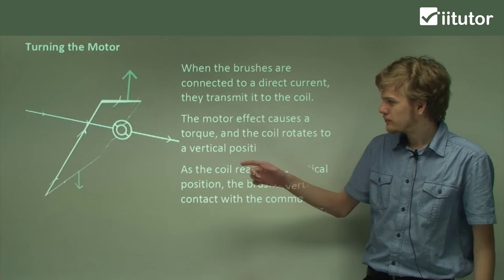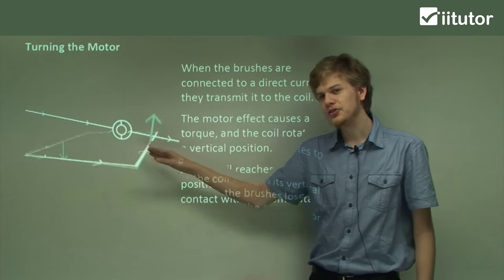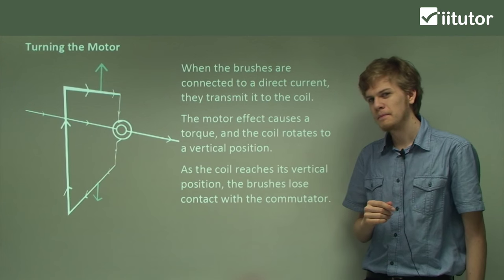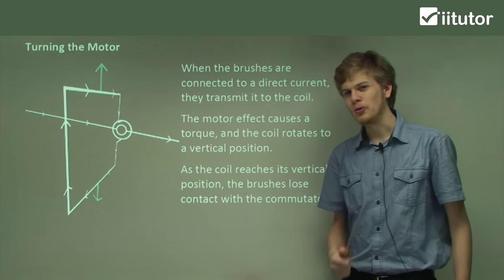Now at this point, the external current will connect to the other side of the split ring commutator. So what will that mean for the forces on the armature? Let's take a look.